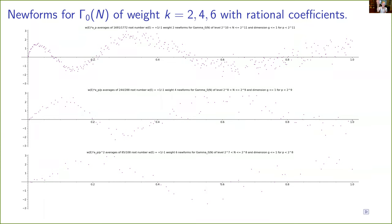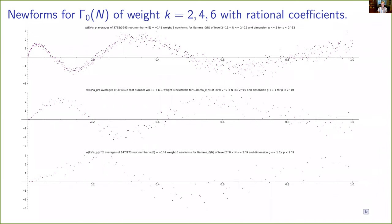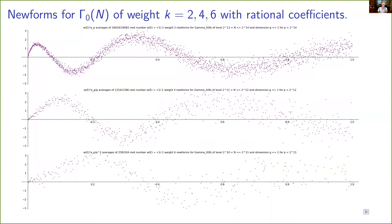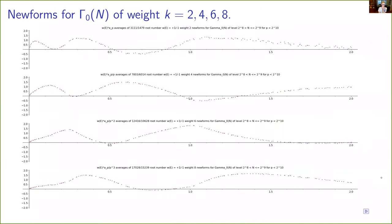Starting from elliptic curves, the first thing to try is weight-2 cusp forms for Γ₀ with rational coefficients — those are exactly the L-functions of elliptic curves by the modularity theorem. But while we're at it, we may as well consider cusp forms of other weights that also have rational coefficients, just to see if they exhibit murmurations and if the murmuration pattern is any different. This plot shows — not a huge amount of data because it's much harder to compute L-functions of modular forms at this level of granularity — but hopefully at least some suggestion that there is a murmuration pattern, and that the murmuration pattern is slightly different depending on the weight.